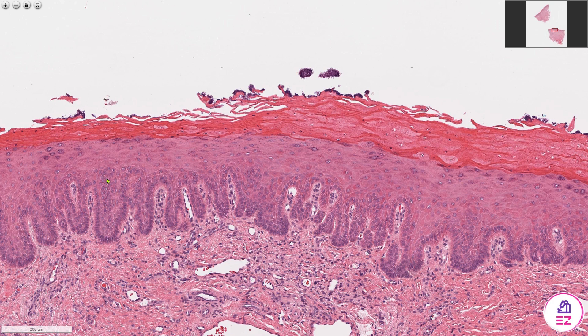I'm delineating now where we have quite proliferative bulbous rete pegs. If you look at this one in particular, you can see it's wider at its base than towards the neck, and this one here is quite wide or drop-shaped. There's also a degree of budding, which is quite a worrisome architectural feature. This rete peg pattern is concerning for dysplasia because of this bulbosity and budding architecture — these are architectural features of dysplasia.